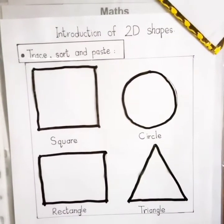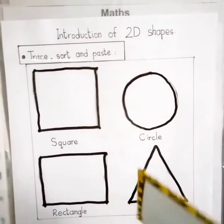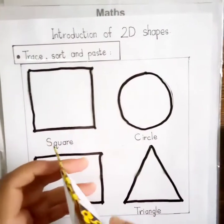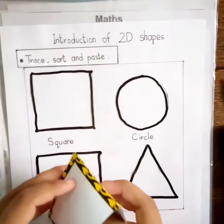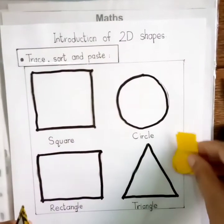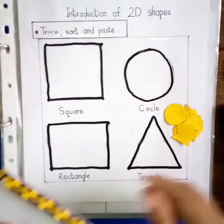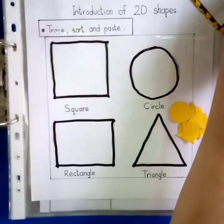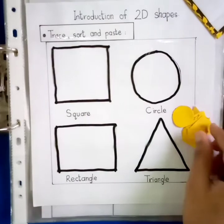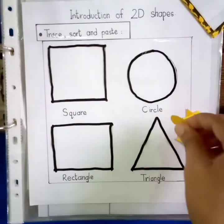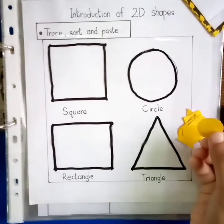Now, what I have? I have an envelope. In this envelope, let's see — I have 4 2D shapes here. What we are going to do is sort the shapes and put them in their respective shapes. So let's start. Which shape is this? Circle. Okay.